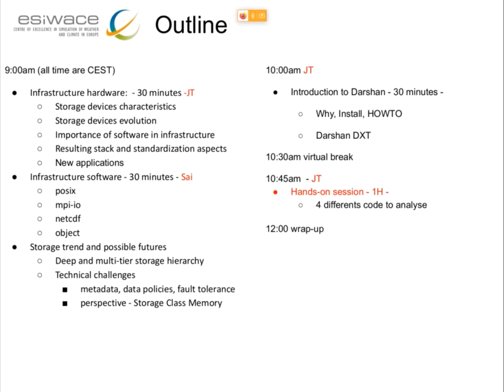A short outline of the morning. We have several slots of 30 minutes. The first one is about hardware — mostly my part. Then afterwards, Zai will spend most of his 30 minutes talking about the software aspect and some interesting APIs. At 10 a.m. we will have a short introduction on Darshan, budgeted for 30 minutes. Then there is a break, and after the break a hands-on session trying Darshan, this profiling tool, to profile the I/O from several small codes we have provided. At noon we will wrap up.